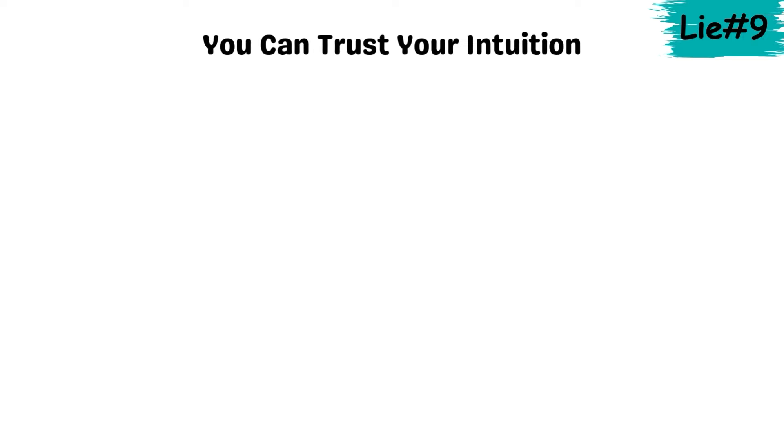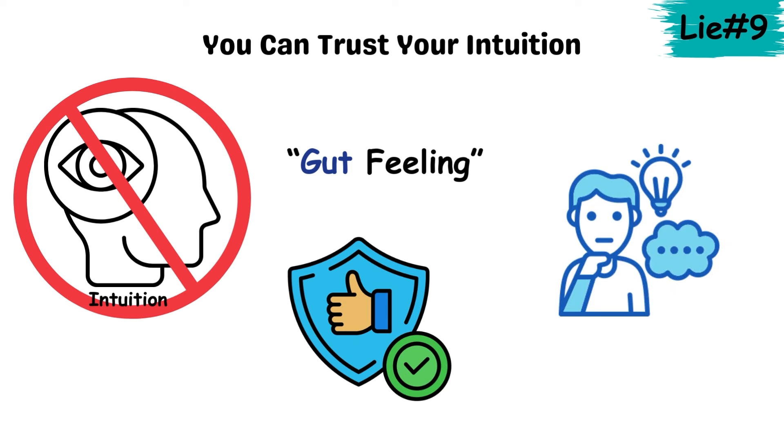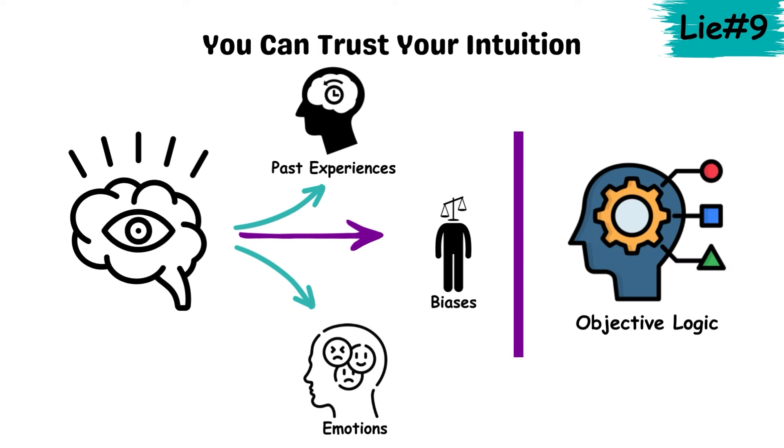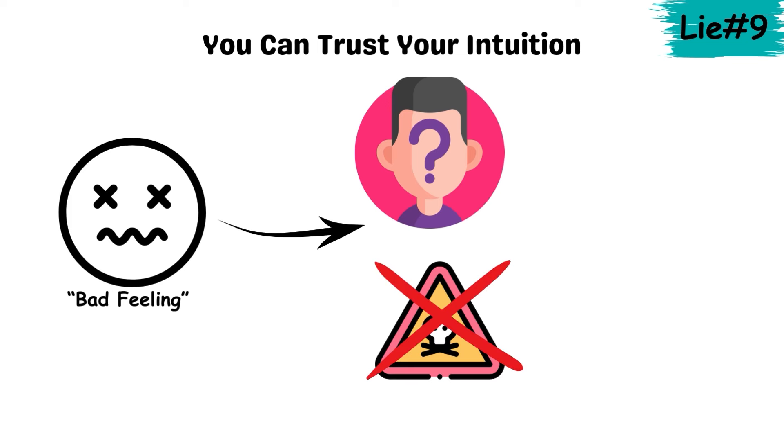Lie 9. You can trust your intuition. Intuition is often celebrated as a gut feeling, but it's not always as reliable as we think. Intuition is shaped by past experiences, biases, and emotions rather than objective logic. For instance, you might get a bad feeling about a stranger. Not because they're dangerous, but because they remind you of someone else from your past.